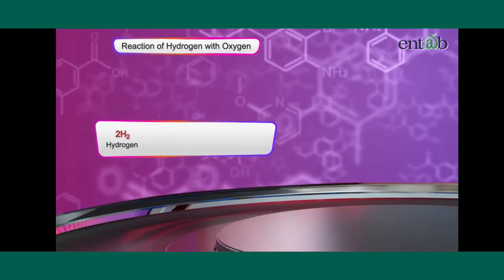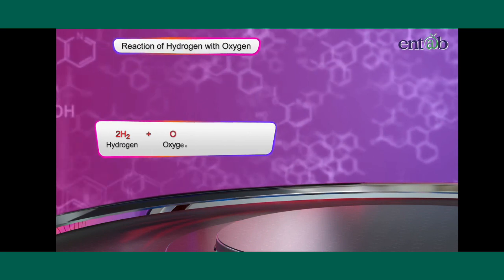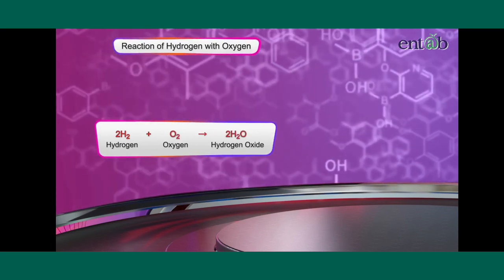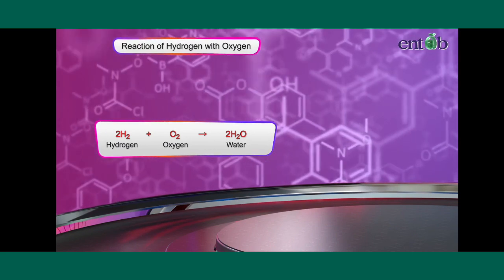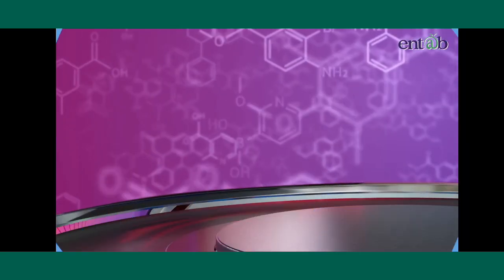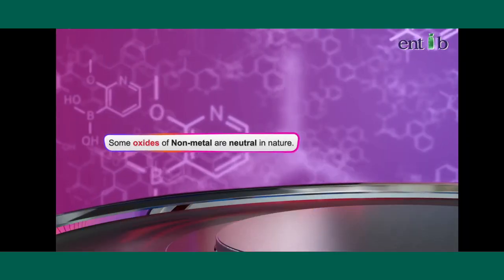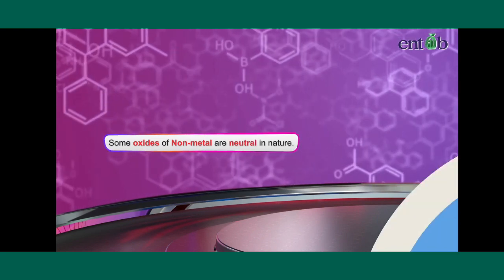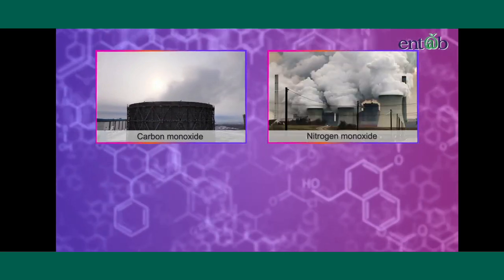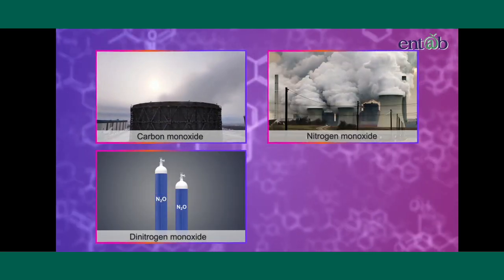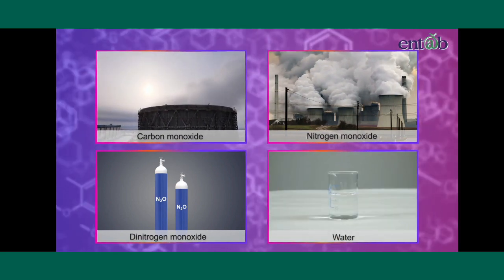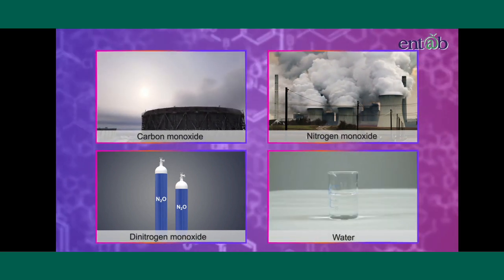Hydrogen combines with oxygen to form a neutral hydrogen oxide — water. Some oxides of non-metals are neutral. Examples of neutral oxides include carbon monoxide (CO), nitrogen monoxide (NO), dinitrogen monoxide (N2O), and water, which is hydrogen oxide.